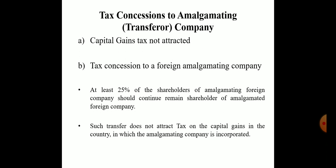First, tax concession to the amalgamating company or transferor company: capital gains are not attracted. According to Section 47 subsection 6 of the Income Tax Act, where there is a transfer of any capital asset by the amalgamating company to the amalgamated company, such transfer will not be regarded as a transfer for the purpose of capital gain. So there is no capital gains tax benefit applicable here.